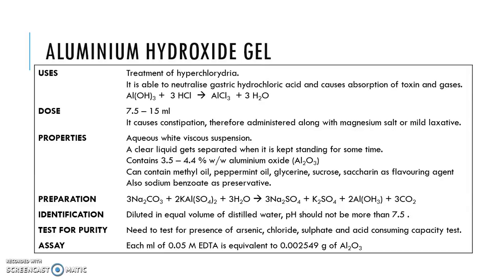This is the monograph for aluminium hydroxide gel. We look at the properties, identification, preparation, purity test, and assay. Aluminium hydroxide gel works by reacting with the hydrochloric acid in the stomach and neutralizing it. The properties state it should be white and viscous.